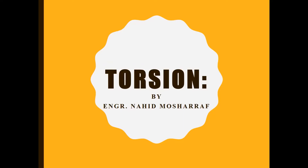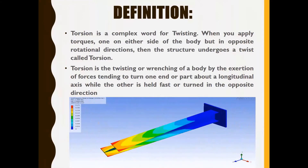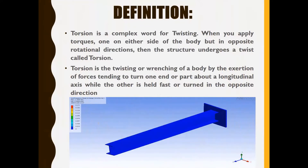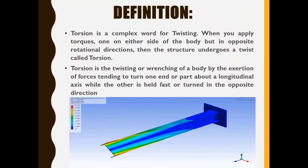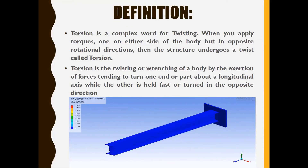Let's start with the definition. You can see there is a rod designed on software like Abaqus. You can see there is twisting in the rod — this happens when you rotate it, it starts to twist. So what is torsion? Torsion is essentially a complex word for twisting.